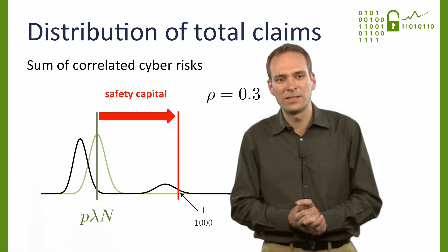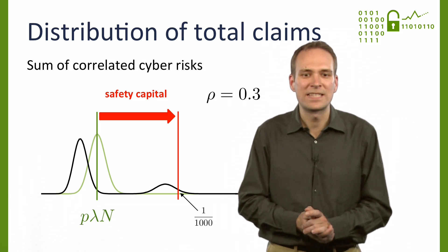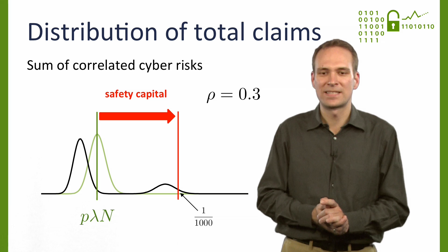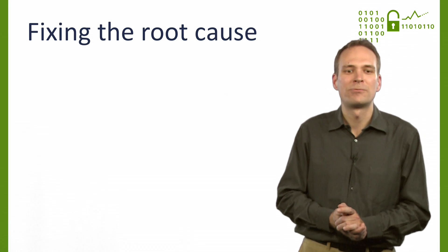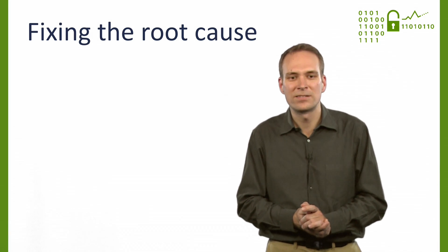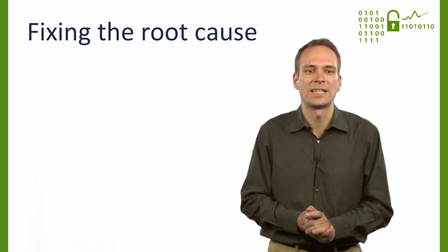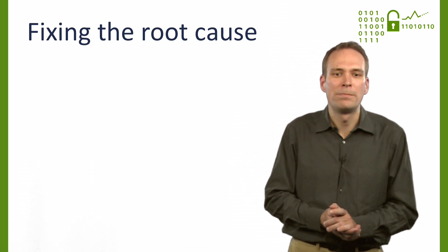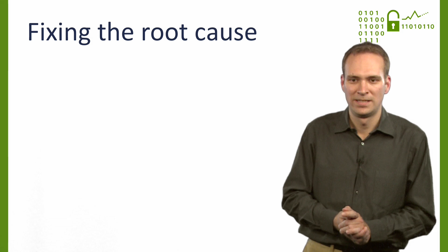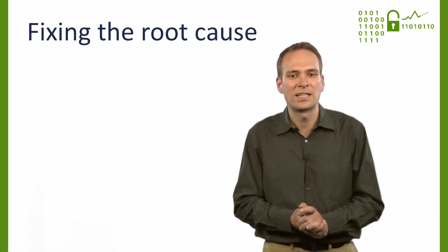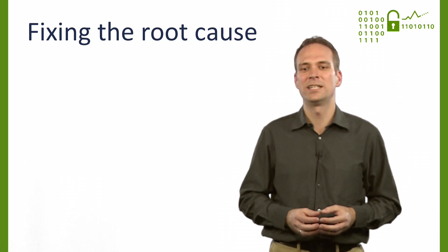Although it is difficult to quantify the amount of correlation exactly, there is quite some evidence that cyber risk is often correlated. Making cyber risk insurable therefore means tackling the root cause of correlation — for example, by building and deploying more heterogeneous systems, so that newly discovered vulnerabilities do not become a common risk factor. Another option is to limit interconnections to cut the propagation of risk in a network.